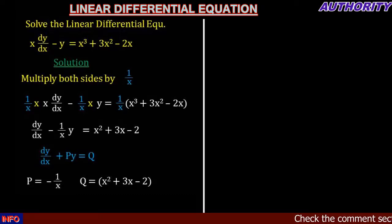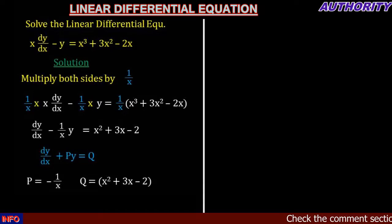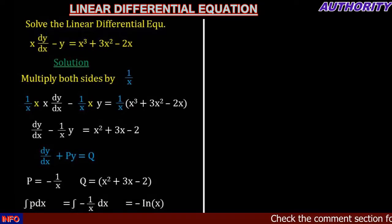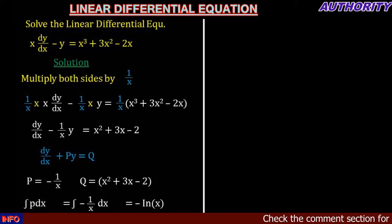Since we have P equal to negative 1 over x, integrating P with respect to x, we have the integral of P dx. When we integrate negative 1 over x dx, it is going to give us negative ln(x).